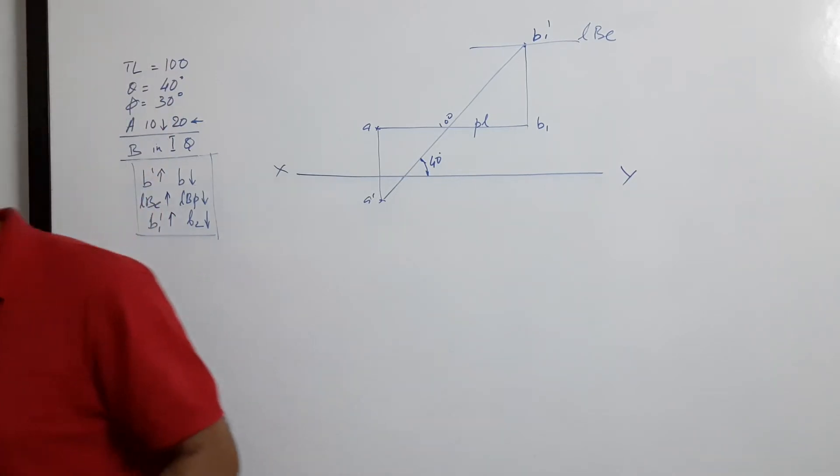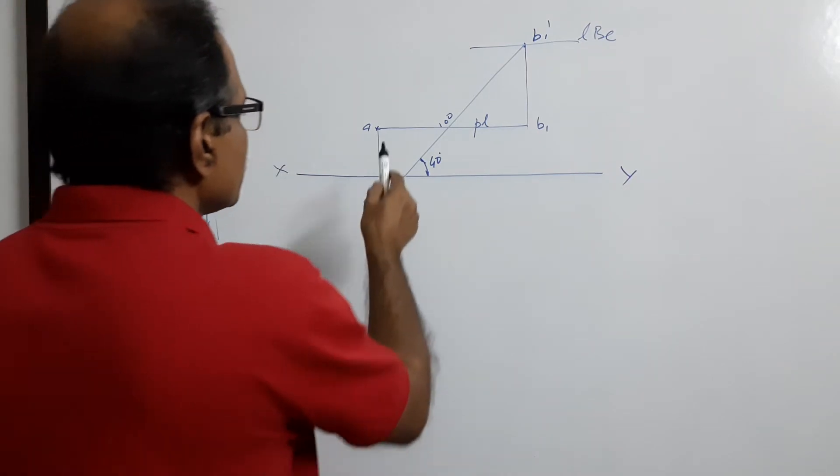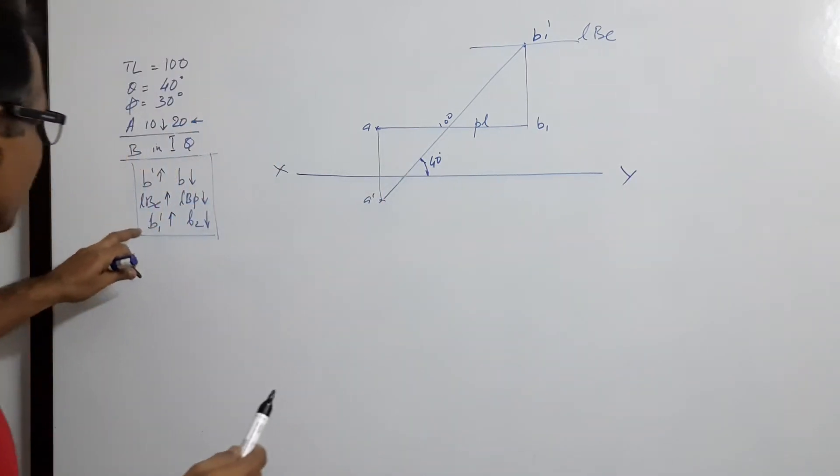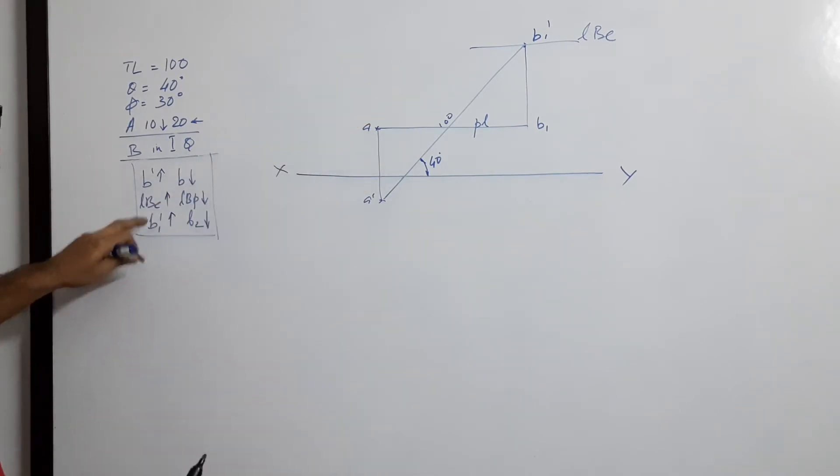For the second case, assume the line is parallel to HP. Let it draw downwards because end B is up, so B dash is up.